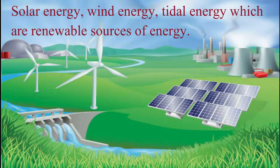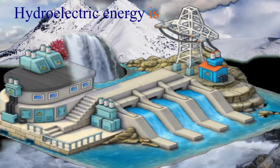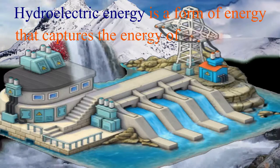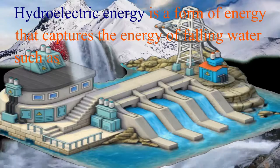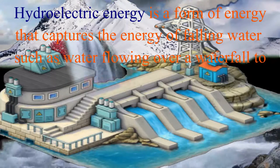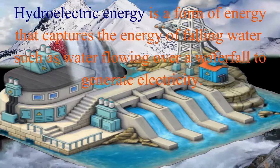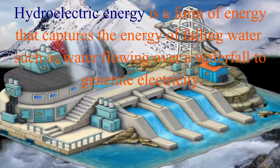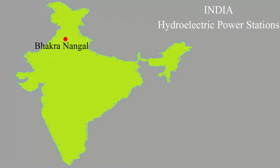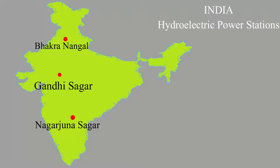Hydroelectric energy is a form of energy that captures the energy of falling water, such as water flowing over a waterfall, to generate electricity. Some important hydroelectric power stations in India are Bhakra Nangal, Gandhi Sagar, Nagarjuna Sagar, and Damodhar Valley projects.